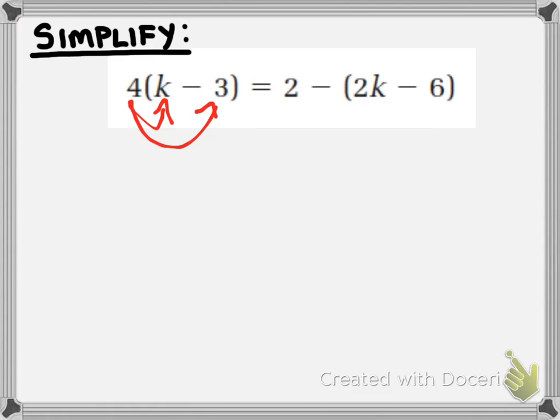Nicely done. So who can do it for me? I've got four times k, four times negative three. What do you think, Anthony? Four k minus 12. Awesome work.